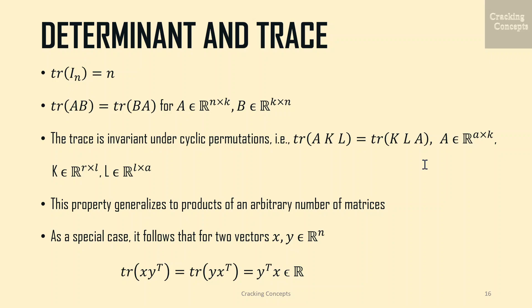The properties of the trace of matrix products are more general. Specifically, the trace is invariant under cyclic permutations: tr(AKL) = tr(KLA), for matrices A in ℝᵃˣᵏ, K in ℝᵏˣˡ, and L in ℝˡˣᵃ. This property generalizes to products of an arbitrary number of matrices. As a special case, for two vectors x, y in ℝⁿ, tr(xyᵀ) = tr(yᵀx) = yᵀx, which is a real number.